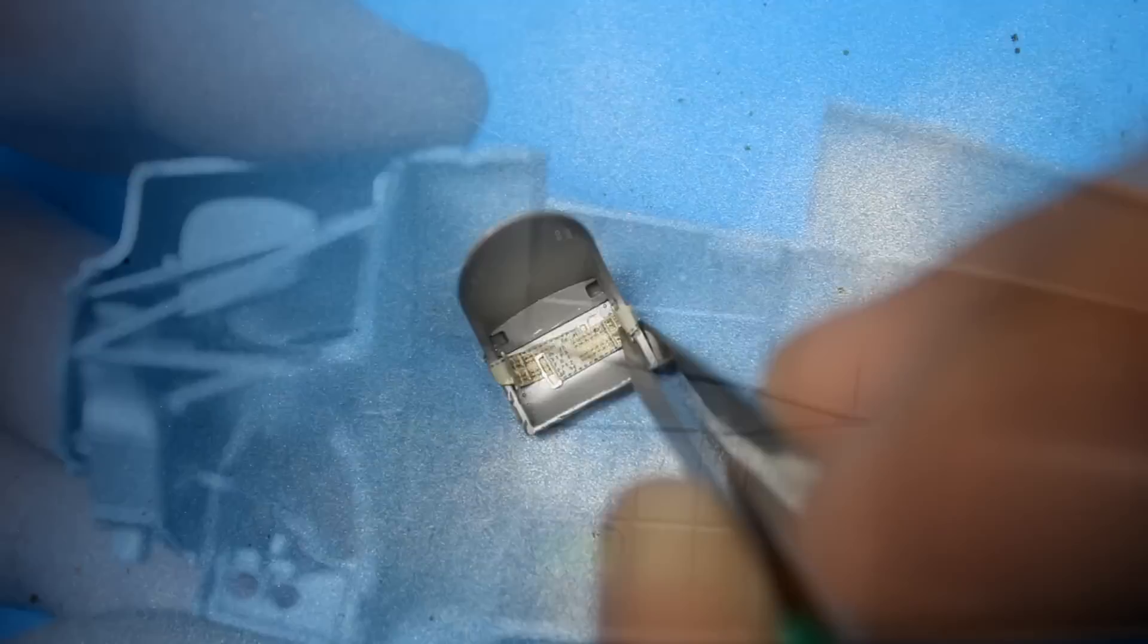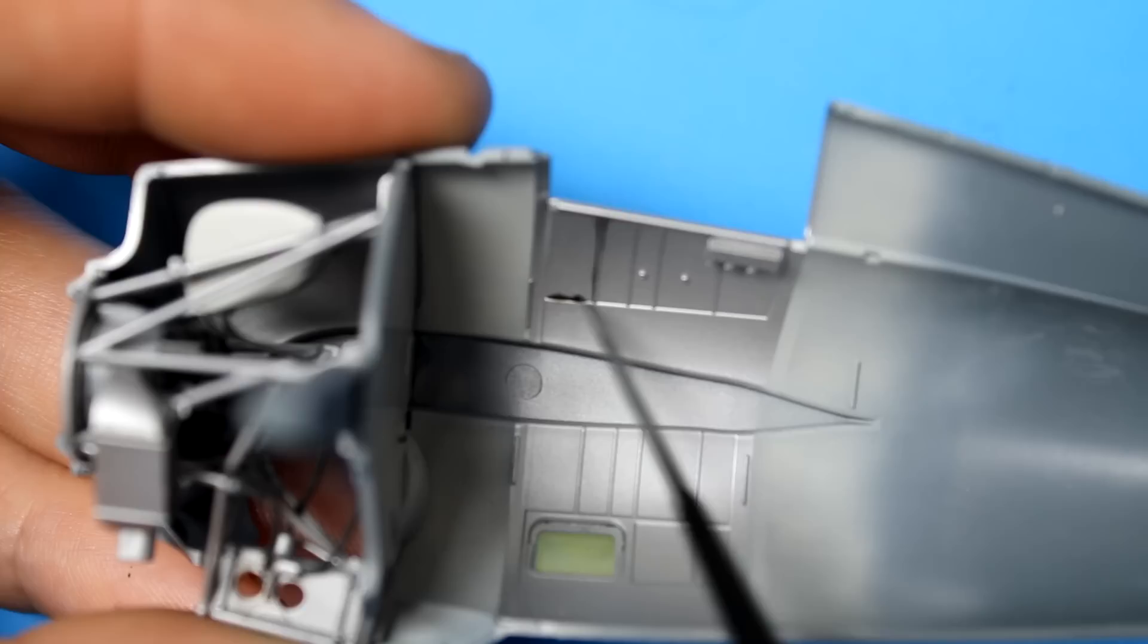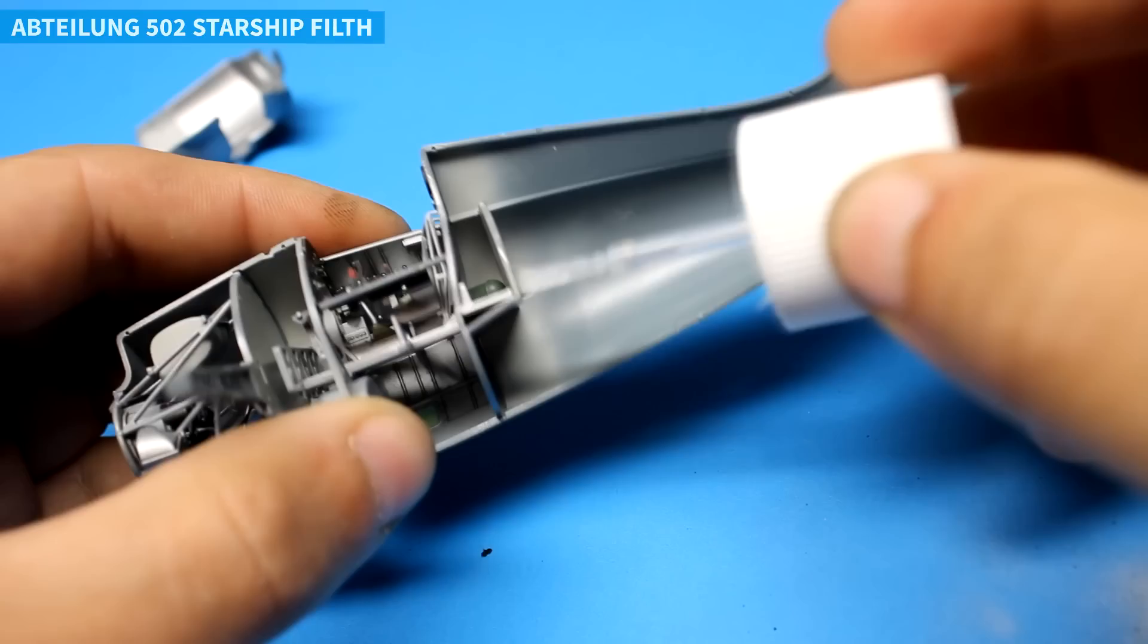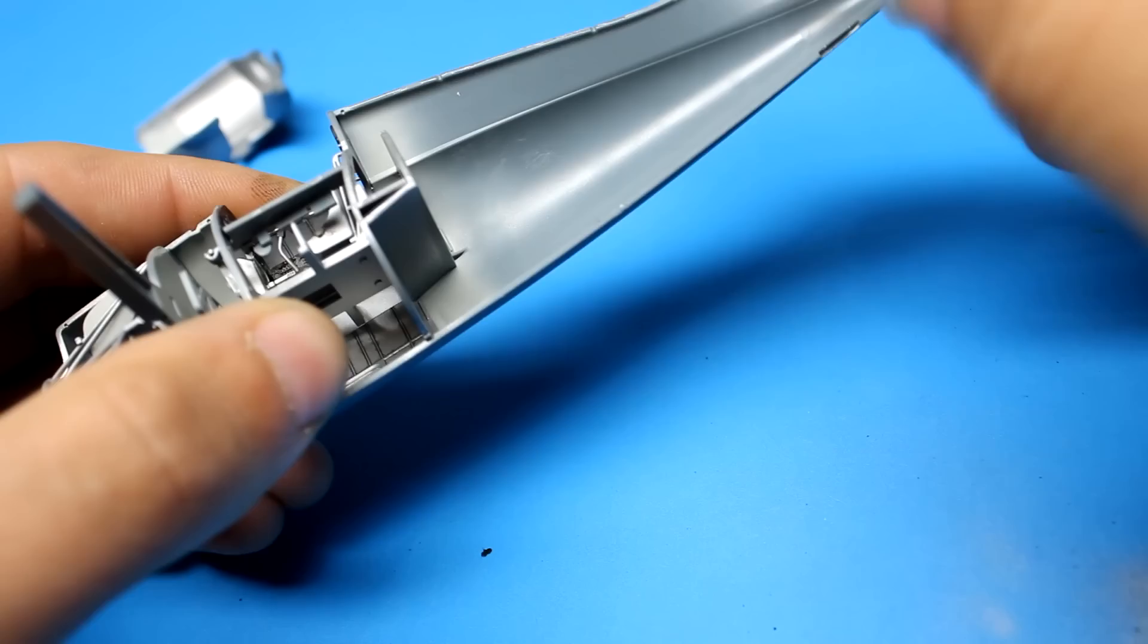Moving on to the photo etch components of the cockpit I use micro crystal clear to glue it in place that way anything that sneaks past dries clear and I can just remove it with some water. Once the wash was applied and tidied up it was time to bring the two fuselage halves together and this is always an exciting moment in a build because it's one of the first major checkpoints that you're making progress.